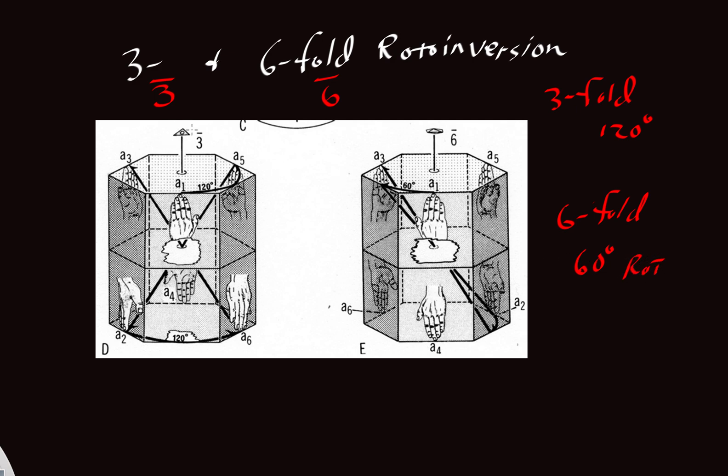So let's take the 3-fold first, the bar 3, using this very nice diagram in the textbook by Bloss. So here we start with A1. That's our first motif. Our motif is a hand. In this case, it looks to be a left hand. And we're going to rotate this fellow 120 degrees in the counterclockwise direction.